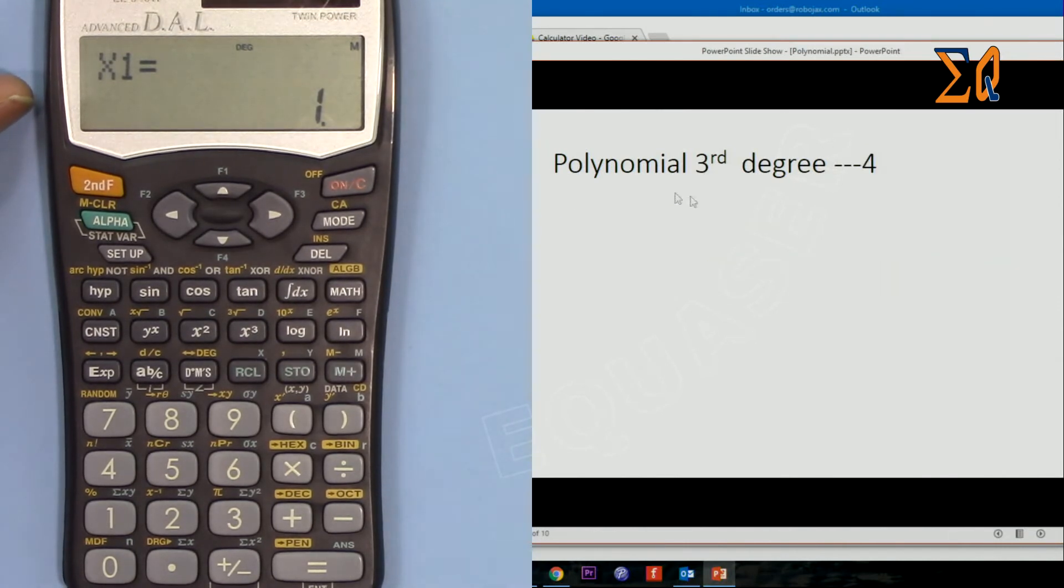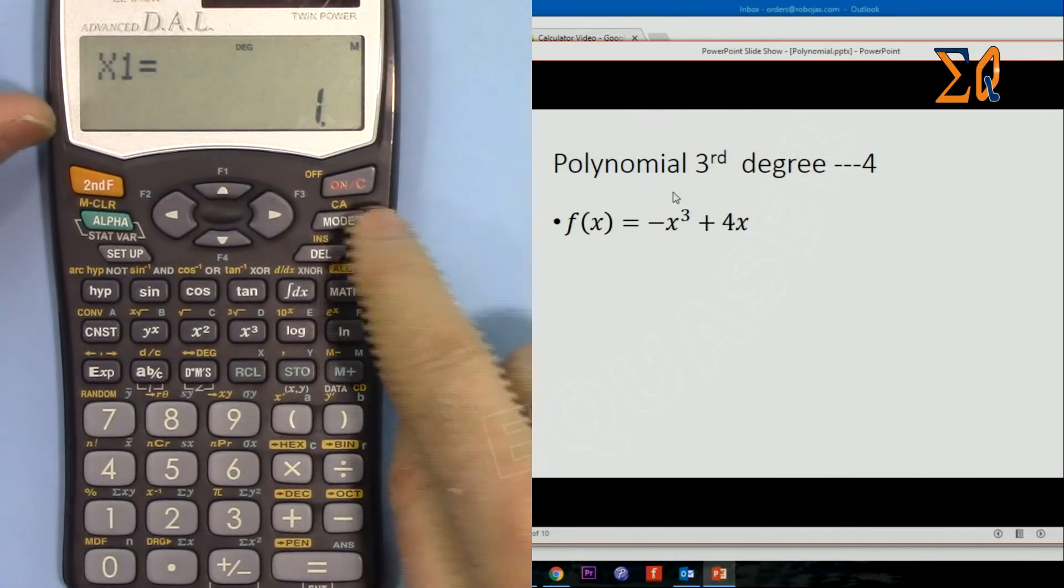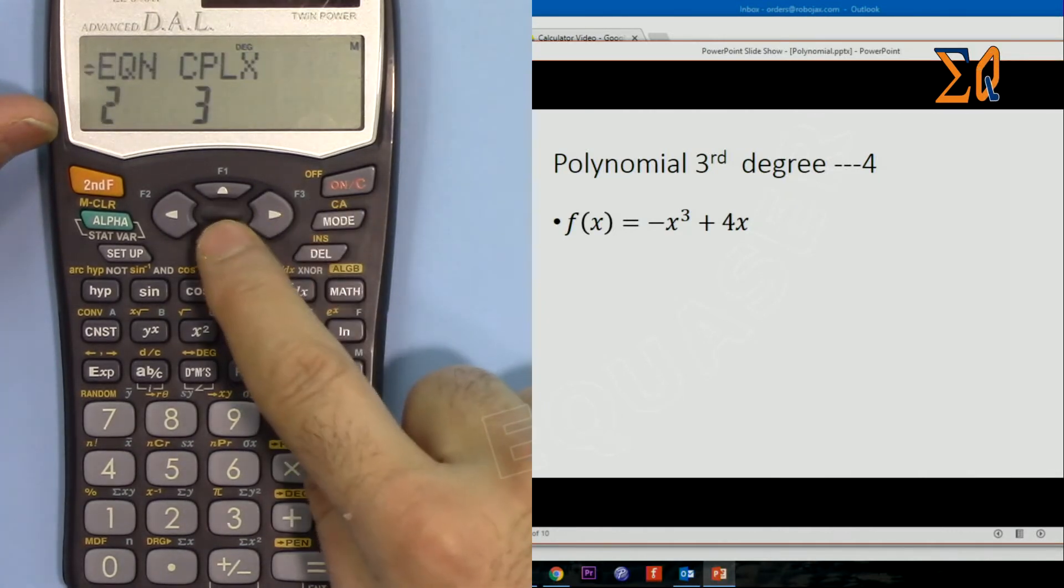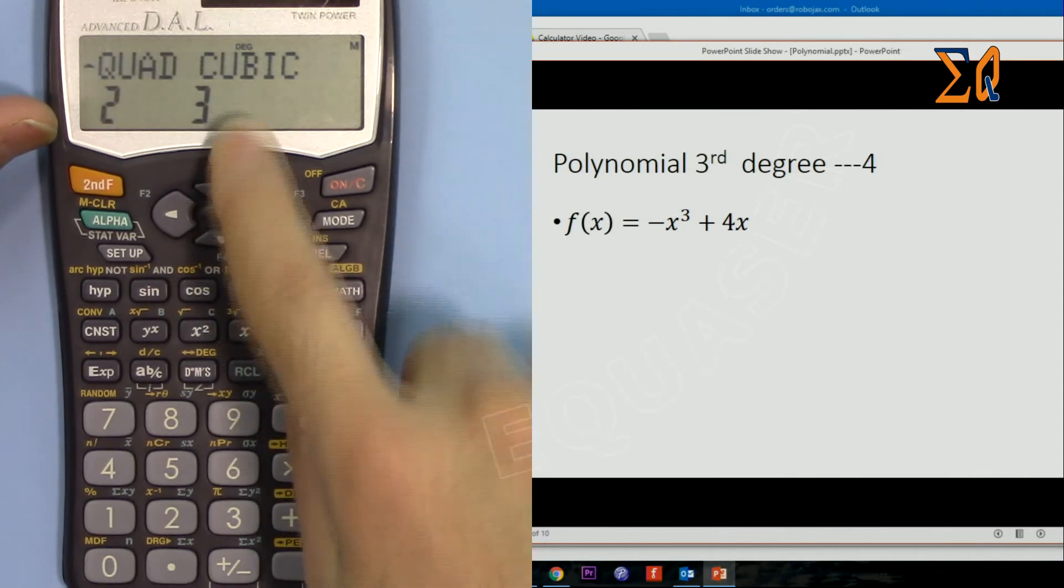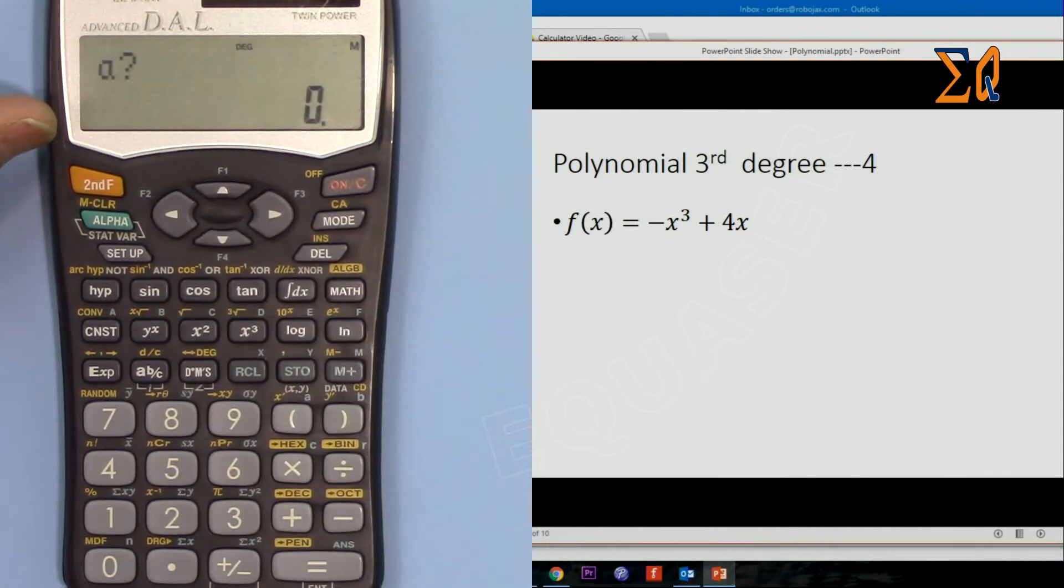Now let's go for the third degree. Press MODE, go down to Equation, press 2, and then go down 3 for Cubic. Now we have this in terms of ax³ + bx² + cx + d.